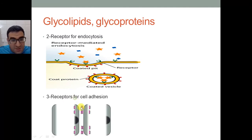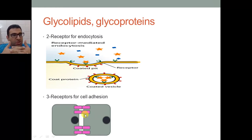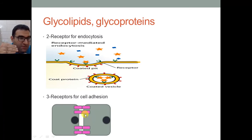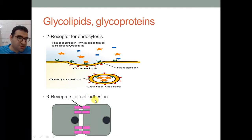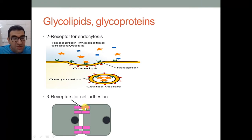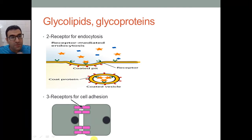Glycolipids and glycoproteins also serve as receptors for cell adhesion. Cell adhesion is when cells bind to each other tightly to prevent breaking apart. Many cells need to be tightly connected to prevent leakage of fluids — like skin cells and intestinal cells. The cell on the left is tightly bound to the cell on the right through glycoproteins and glycolipids that combine together, making cell adhesion. Without those receptors, cells would separate and there would be fluid leakage between them.